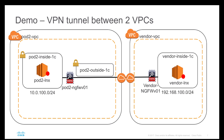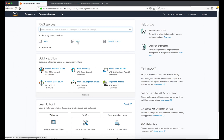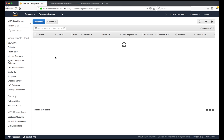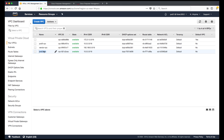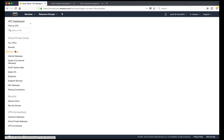Let's move to the third part of the demo — a VPN tunnel between two VPCs. As part of CloudFormation template 2, I deployed a pod-2-VPC with a pod-2 Linux machine and a firewall. On the other side, I created a vendor-VPC with one next-generation firewall and a Linux machine. I'll now show how to secure the connection between two VPCs using an IPsec VPN tunnel. Going to the virtual private cloud section in the AWS console, I can show you both VPCs.